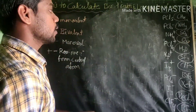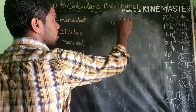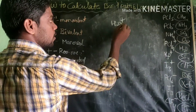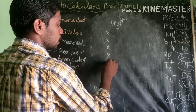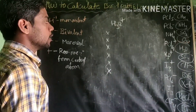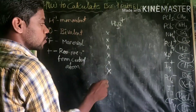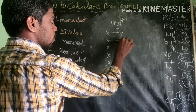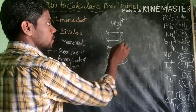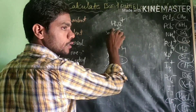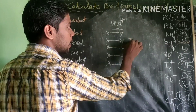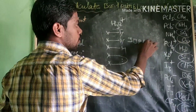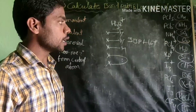Next, H3O+ — the hydronium ion. Oxygen is the central atom with 6 valence electrons. One positive charge means we remove 1 electron, leaving 5 electrons. Three hydrogens form 3 bonds, leaving 2 electrons — forming 1 lone pair. Therefore, H3O+ has 3 bond pairs and 1 lone pair of electrons.